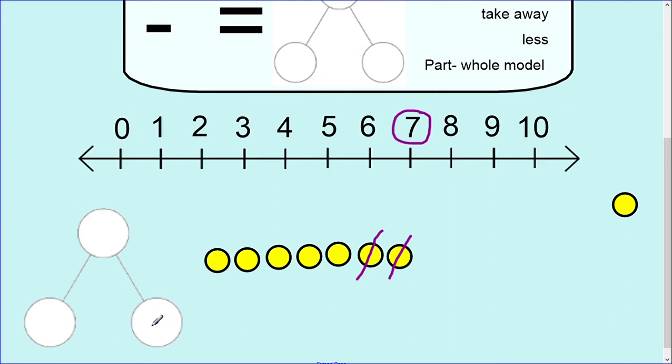Now if we were to record this in a part-whole model, we would say we had seven all together, so seven is the whole. We took away two, or we subtracted two, and how many did we have left? We had five left, so five is the other part.